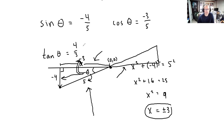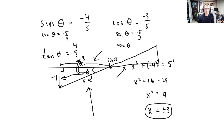So cosine equals negative three-fifths. Tangent is opposite over adjacent: negative 4 over negative 3, which is 4 thirds (the negative signs cancel). Then cosecant is the reciprocal of sine: negative 5 fourths. Secant is the reciprocal of cosine: negative 5 thirds. And cotangent is the reciprocal of tangent: 3 fourths. For those of you that stuck around, thanks — I hope that helped.